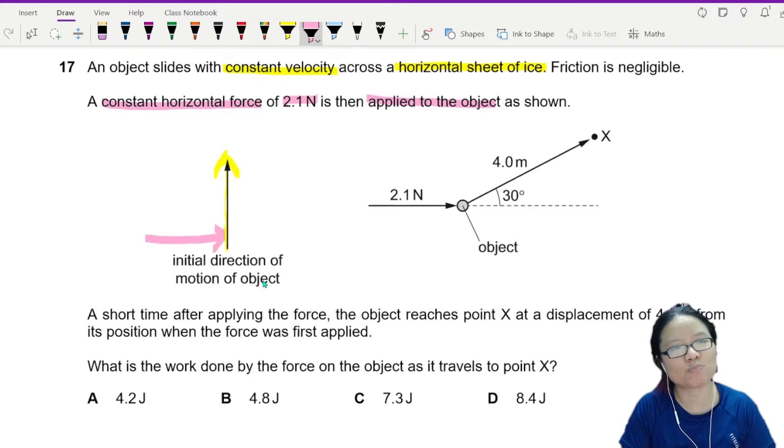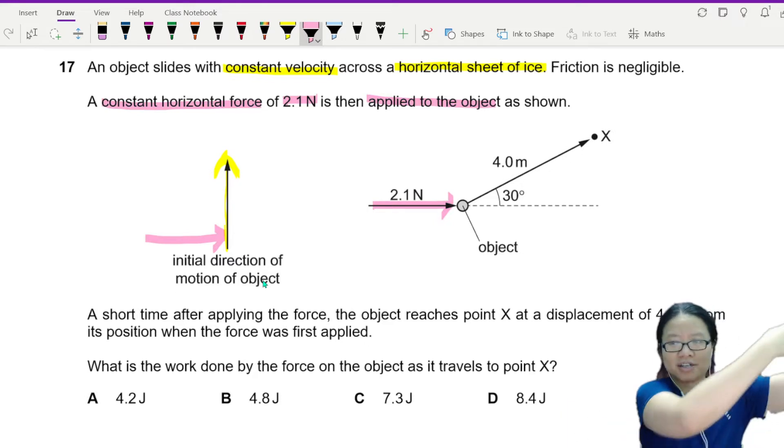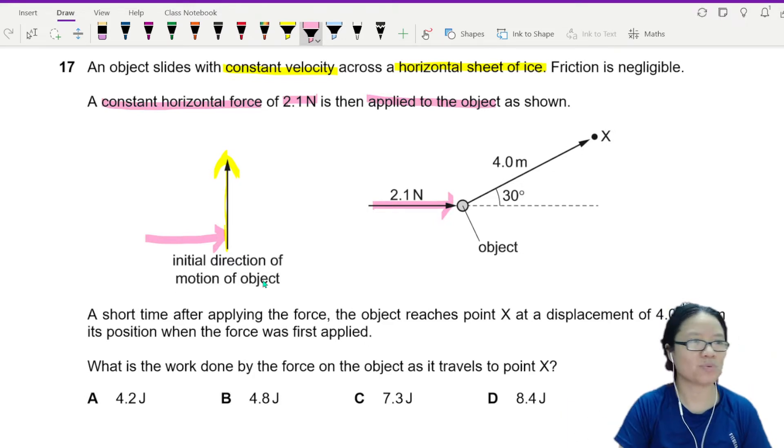There's a 2.1 N force pushing on it like that. So imagine you're moving upwards and then you have a force that is pushing you, moving upwards, there's a force pushing you in this direction. What happens? You will get pushed up. So that's why the object ends up going in this direction.